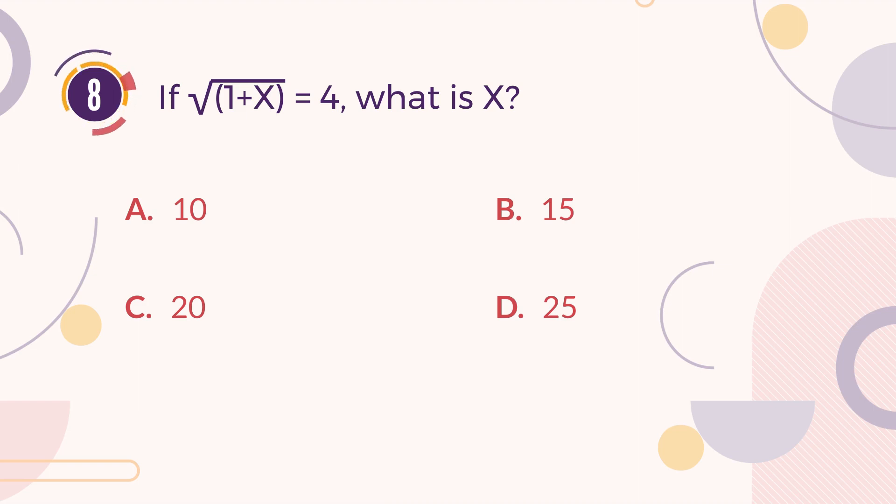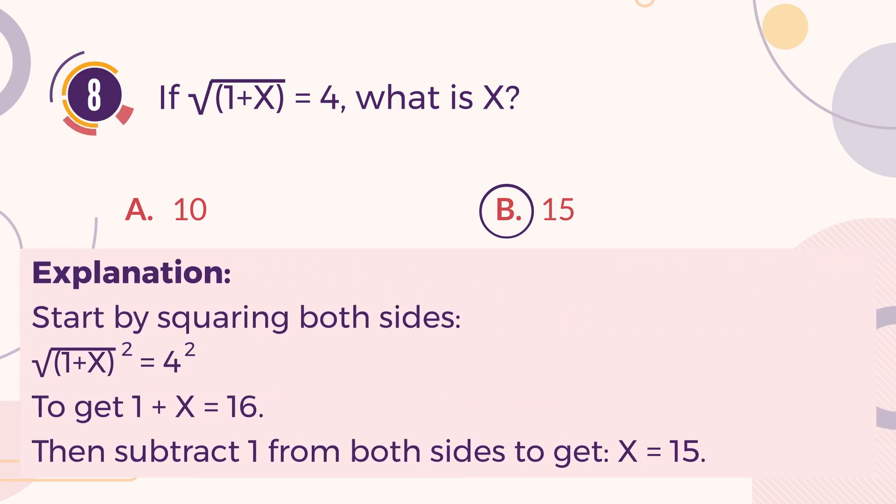The correct answer is B. 15. Explanation. Start by squaring both sides to get 1 plus X equals 16, then subtract 1 from both sides to get X equals 15.